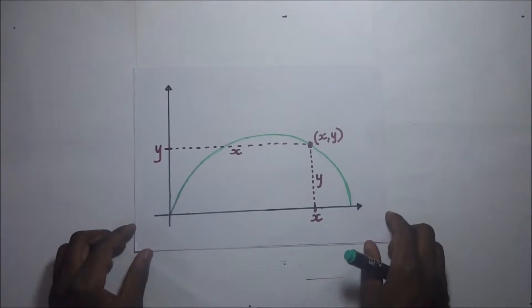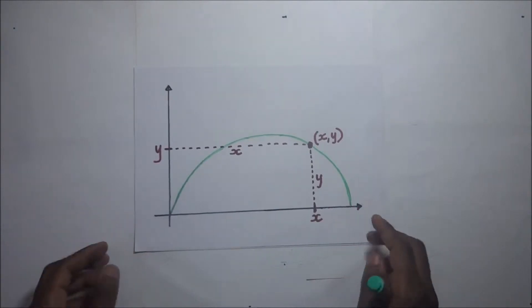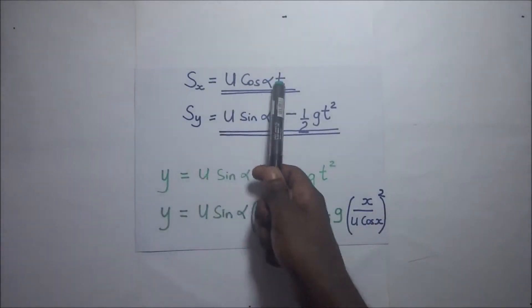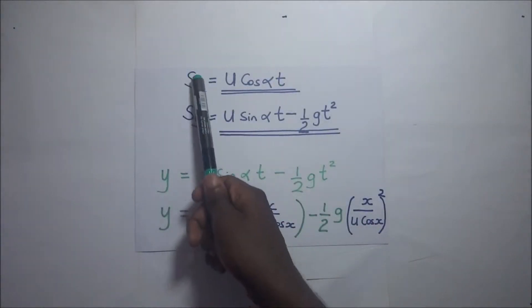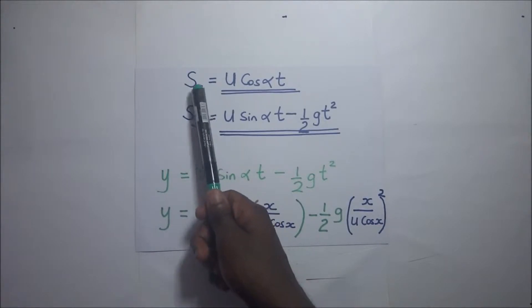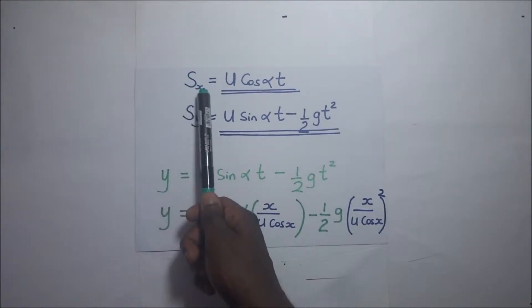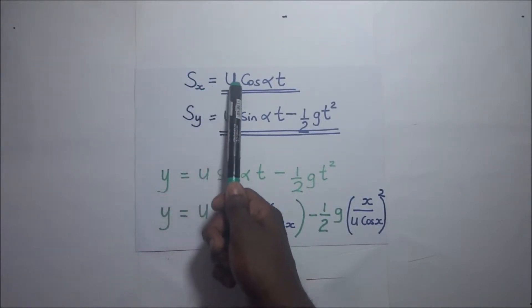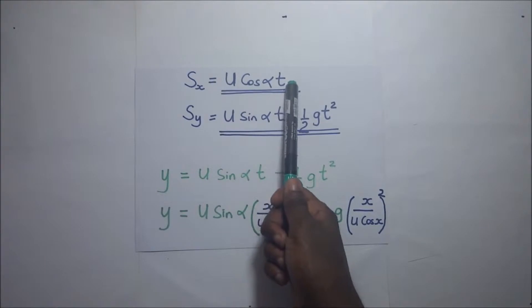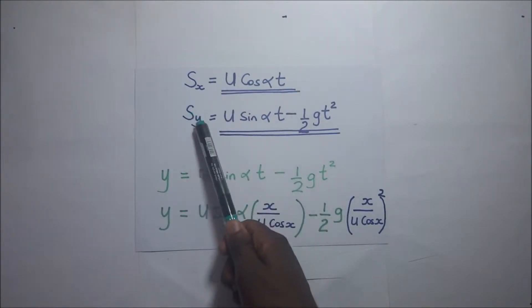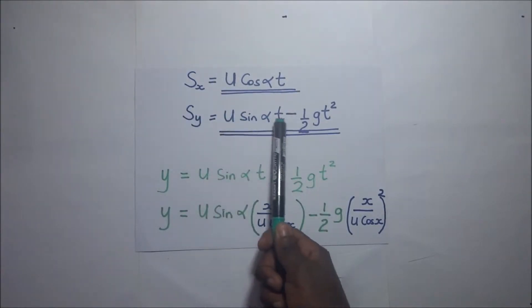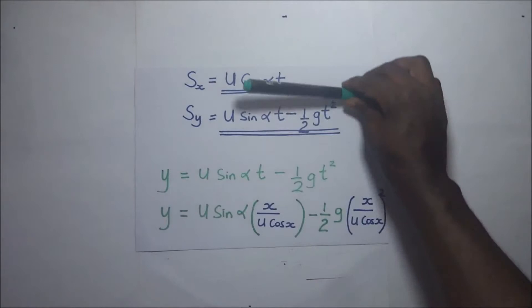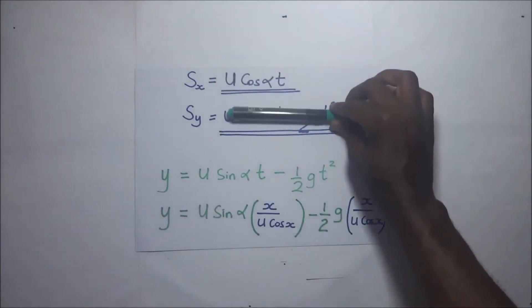We are going to use two equations: the equation of vertical displacement and horizontal displacement of a projectile motion. S_x, that is the displacement in the x direction — let's call it x — is u cos(alpha) times t. The displacement in the y direction is given by the second expression.